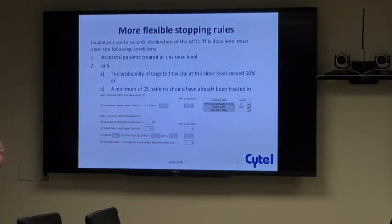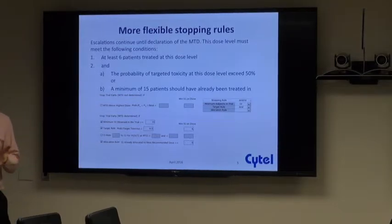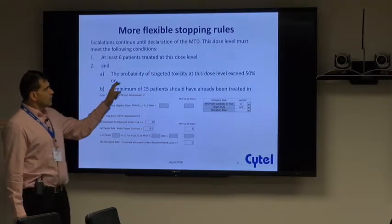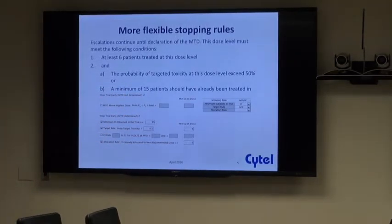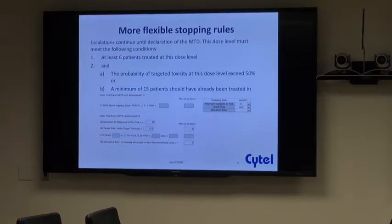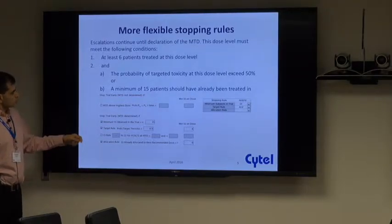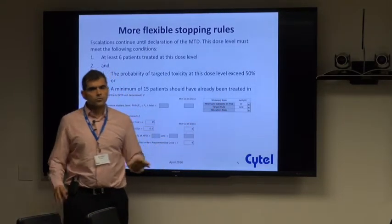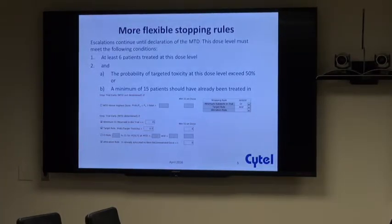For example, this is a complex stopping rule used in some of the BLRM designs — the notion that for a dose level to be declared an MTD, the conditions require at least six subjects treated at that dose, and either having the probability of falling in the targeted toxicity interval being greater than 50% a posteriori, or having at least 15 subjects in the trial up to that point. A collection of rules like this corresponds to selecting which rules you want from a laundry list and then modifying the AND/OR operators to get to what you'd like.